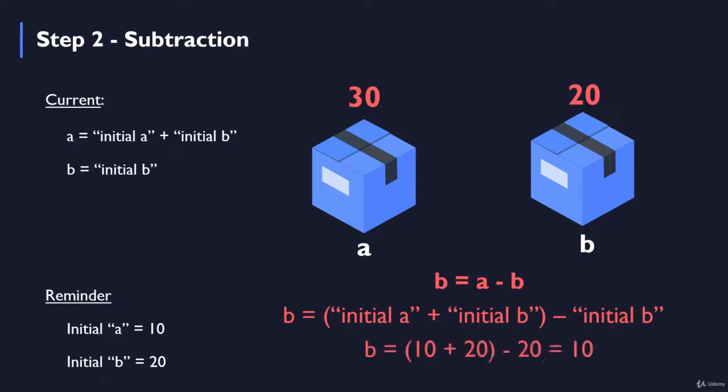If we make this subtraction, we will see that 10 plus 20 minus 20 equals 10. So now B, the variable B, has the actual previous A value, the initial A value. We can see that B has the initial A value, which is 10. That's the summary of the second step, which is subtraction. The current status of A remains the same. It's initial A plus initial B, and B equals initial A.